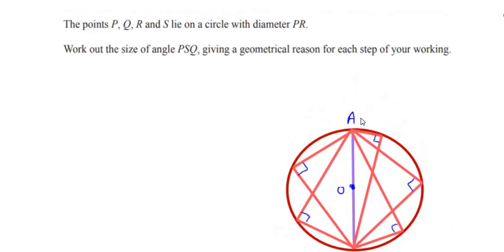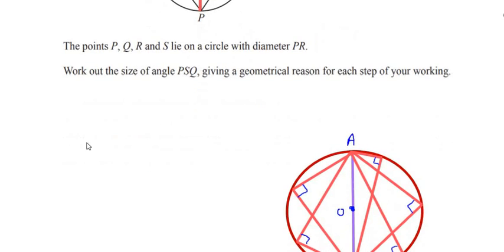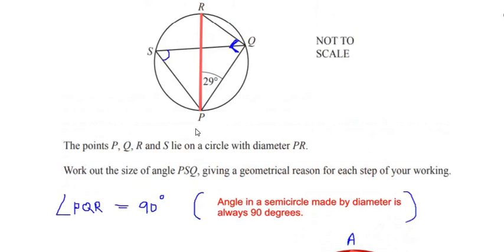Using this theorem, we can see that PR is a diameter and it is making angle PQR in the semicircle. So using the theorem, angle Q becomes 90 degrees. We write: angle PQR is equal to 90 degrees. The geometrical reason is: the angle in a semicircle made by the diameter is always 90 degrees.